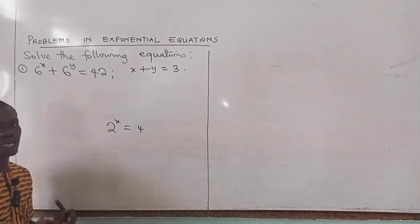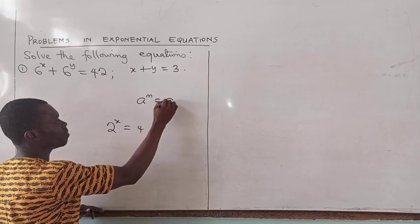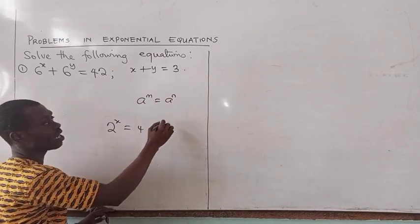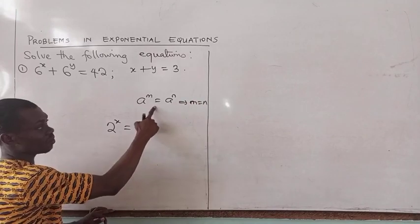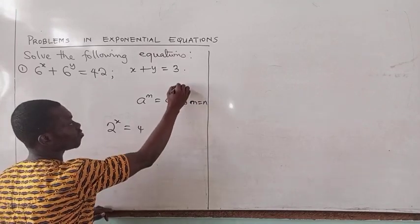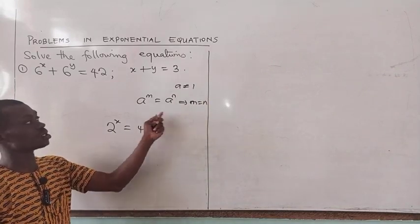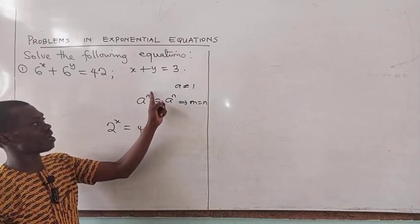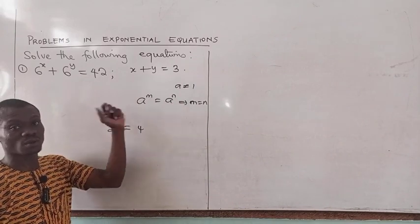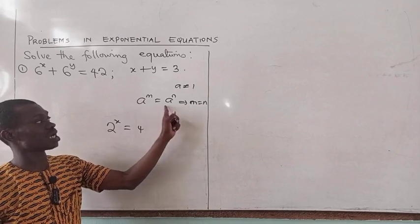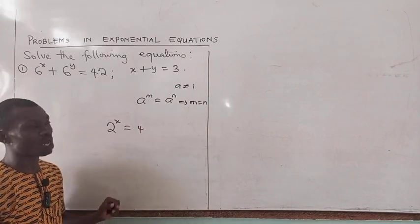And when that happens, we can apply that rule that says if a raised to power m is equal to a raised to power n, then m is equal to n. Remember here that a must not be 1. If a is 1, then this rule doesn't hold because 1 raised to any power will always give you 1, so the equation can be equal while the powers are not equal.